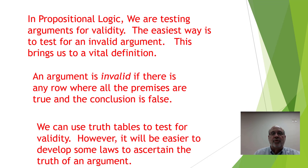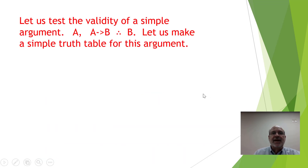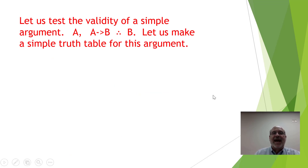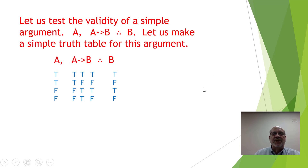However, it will be easier to develop some laws, some rules, to ascertain the truth of an argument. So let's test for the validity of a simple argument: A, A implies B, therefore B. Let's make a simple truth table with all four possibilities: A is true B is true, A is true B is false, A is false B is true, A is false B is false.